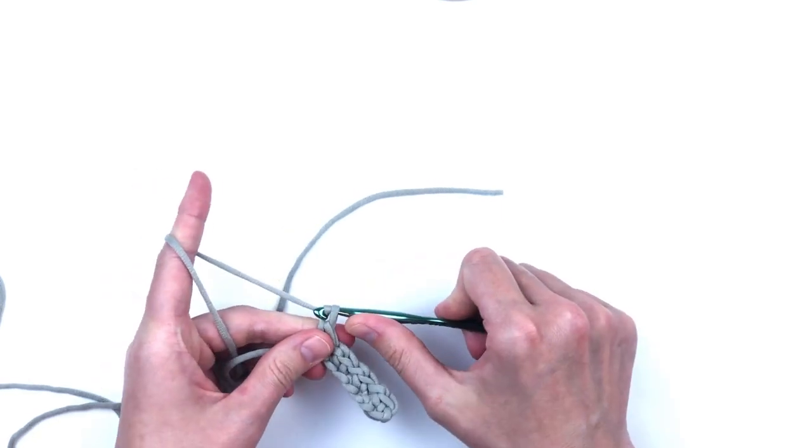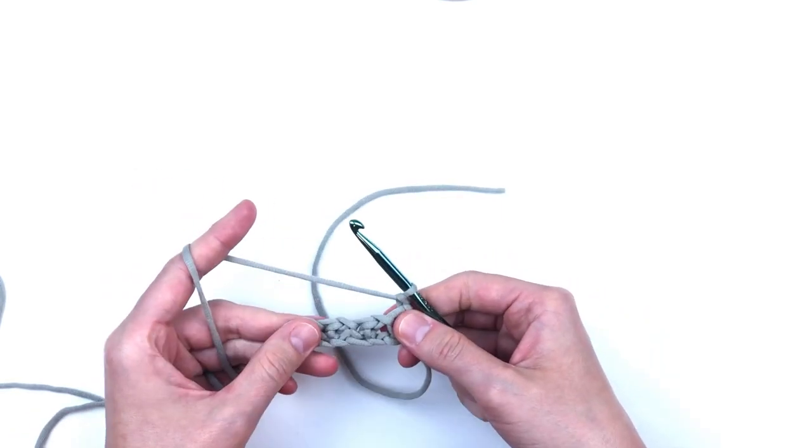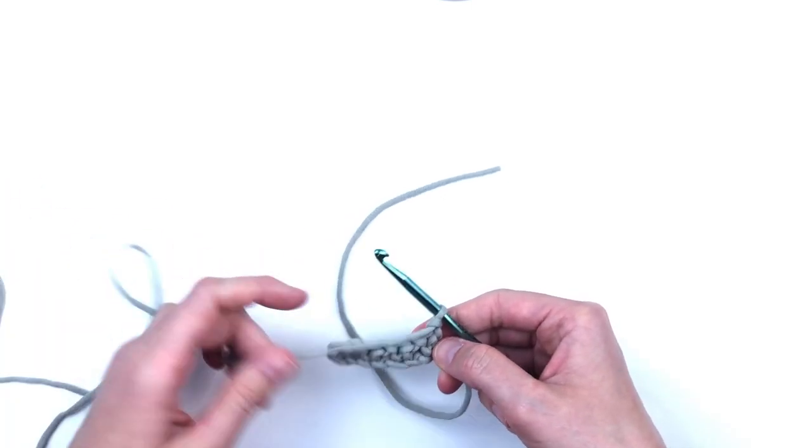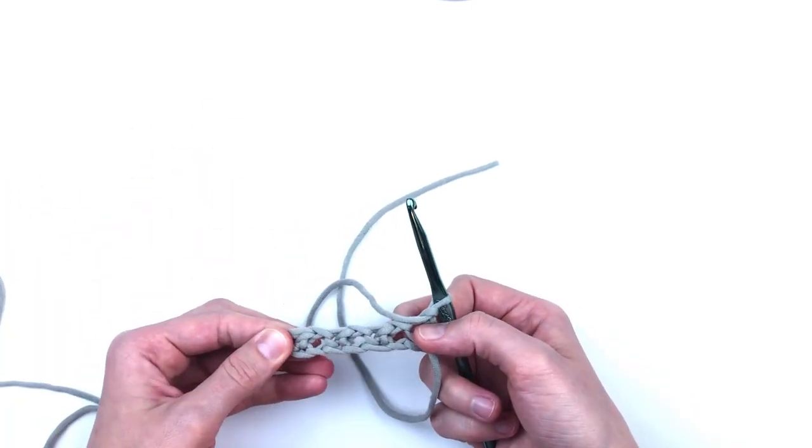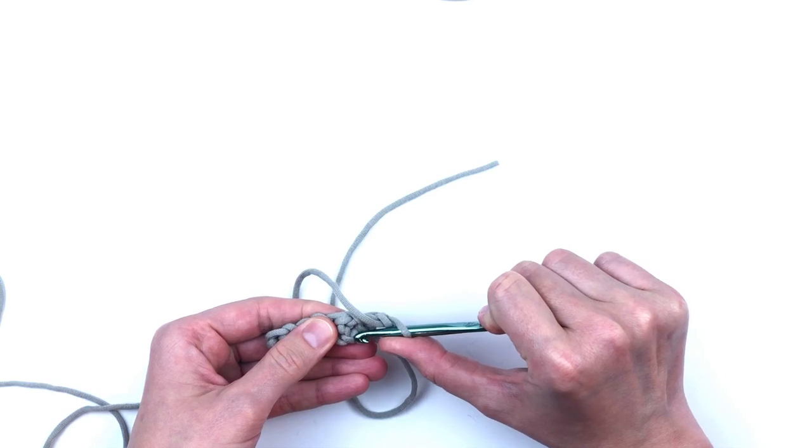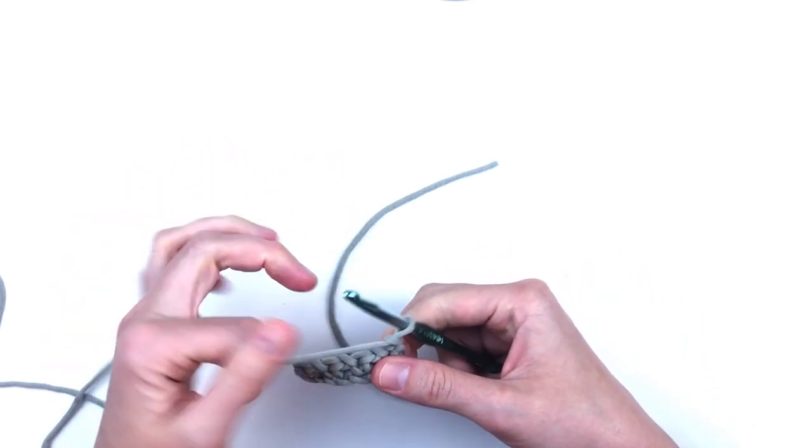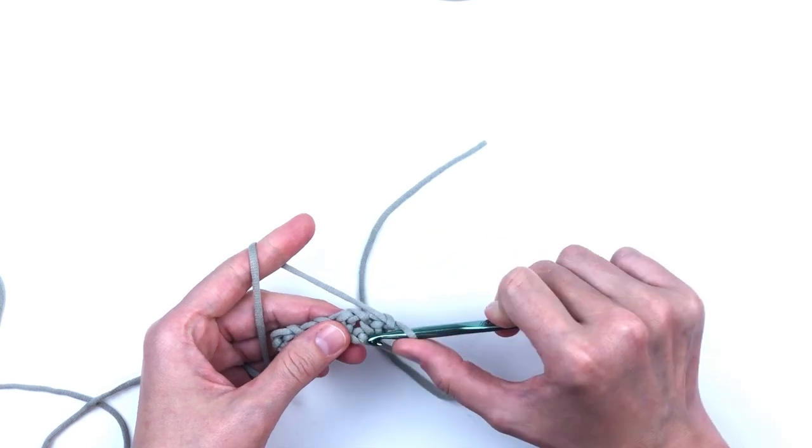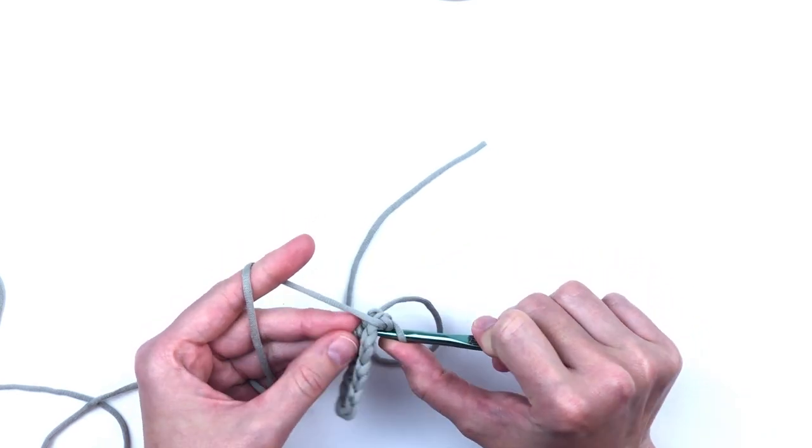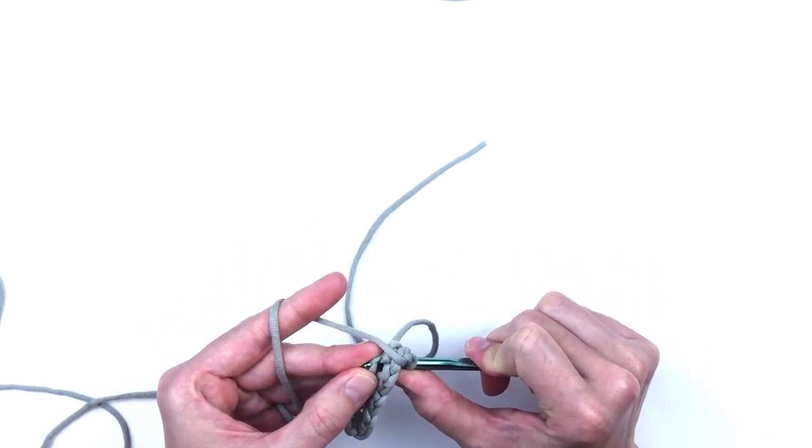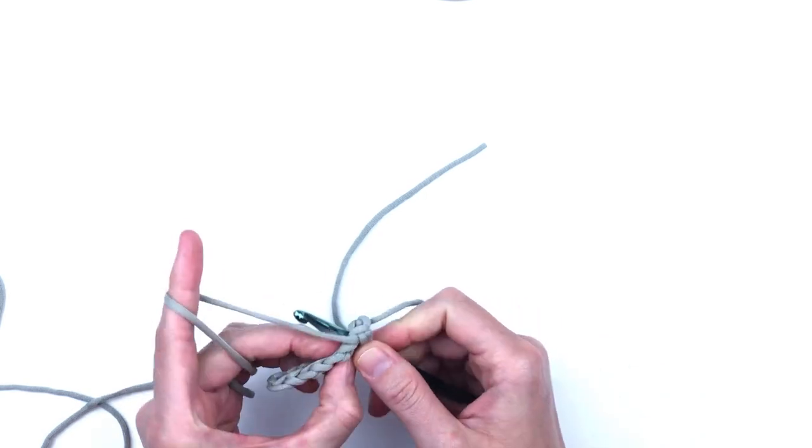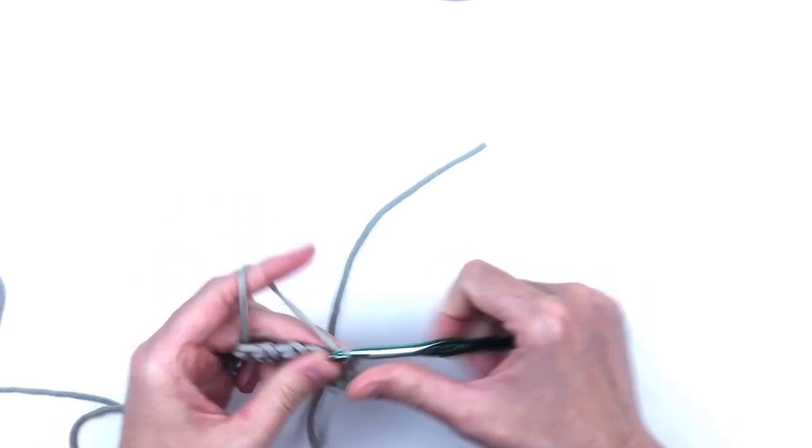For row two, you will chain one and turn and skip the first single crochet. Now in the normal linen stitch you would work in the chain one spaces, but I'm going to work down into the chain that I skipped in the foundation chain. I'm doing this so that there won't be any gaps. It makes it look cleaner. This is considered a drop stitch.